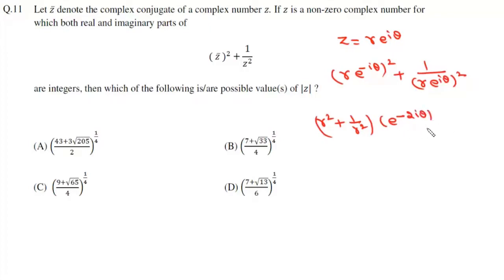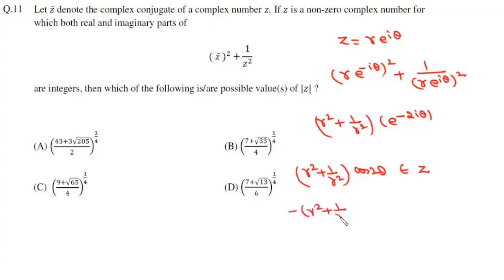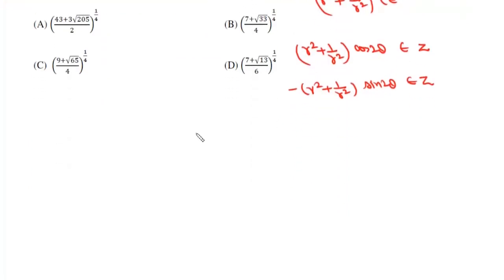For this complex number, both real and imaginary parts are integers. The real part is (R² + 1/R²)·cos2θ, which is an integer, and the imaginary part is −(R² + 1/R²)·sin2θ, which is also an integer. If we square and add them, we get (R² + 1/R²)², since cos²2θ + sin²2θ = 1, and integer² + integer² is an integer.